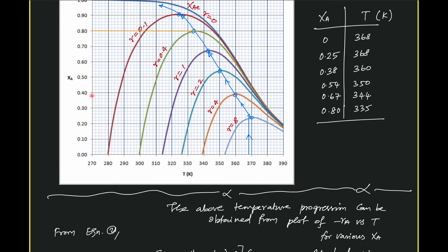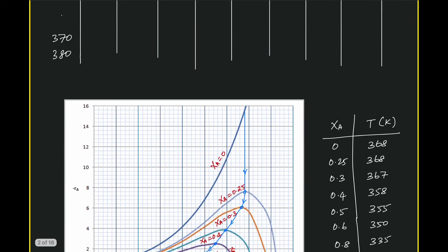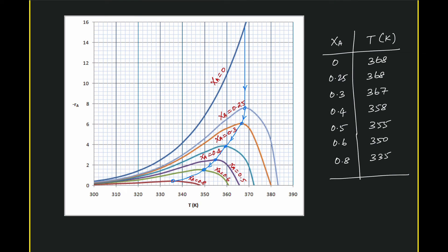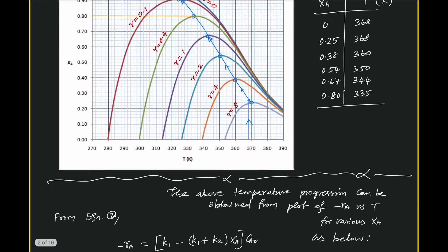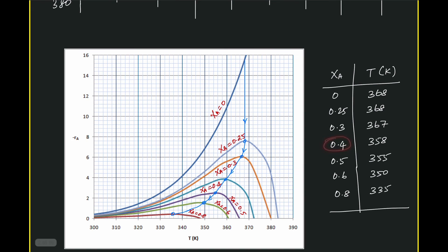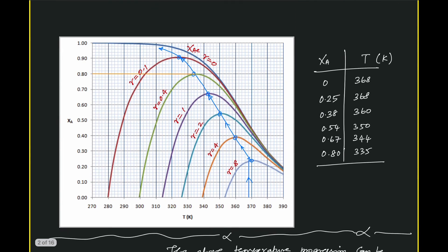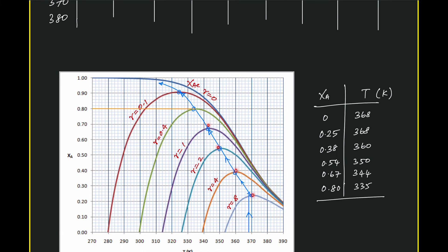From the rate versus temperature plot, if we want the temperature for a conversion of 0.4 (which wasn't directly available from the maxima), this approach gives it directly. Both methods — XA vs T for various rates, and rate vs T for various conversions — yield the same operating line. The advantage of the second approach is that we can fix conversion at any desired value and directly read off the corresponding temperature.